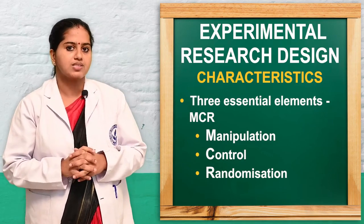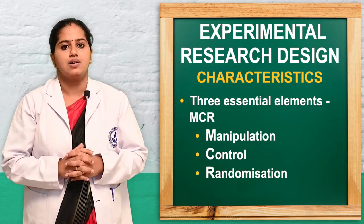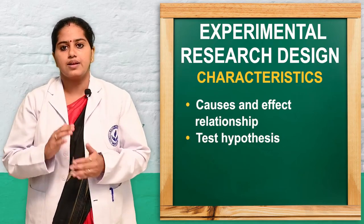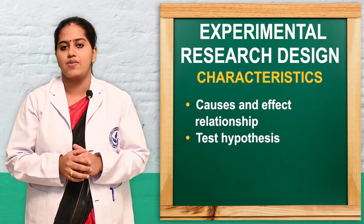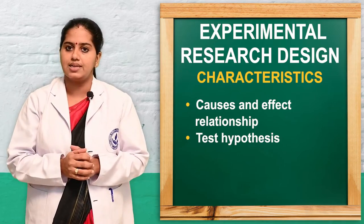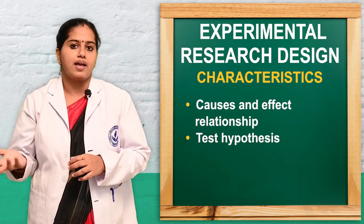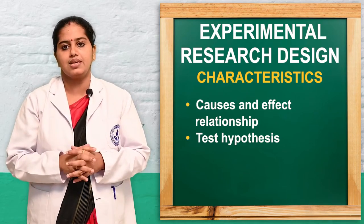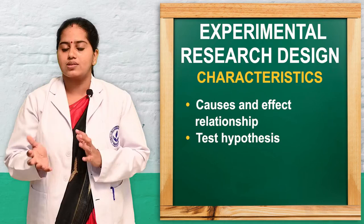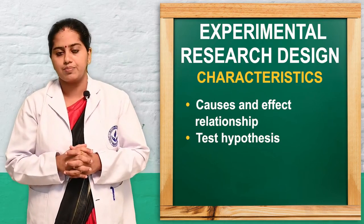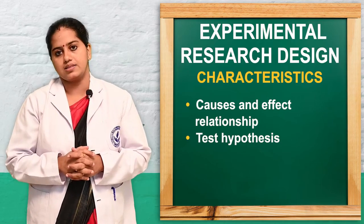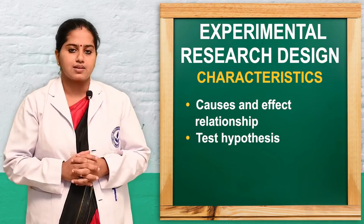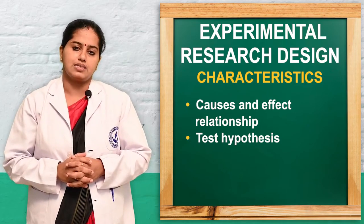These three — manipulation, control, and randomization — are very much essential in experimental design. When manipulation is applied to the independent variable, there will be an effect and changes in the dependent variable. Cause-and-effect relationships can be assessed and we can test the hypothesis. These are the major characteristics of the experimental design.